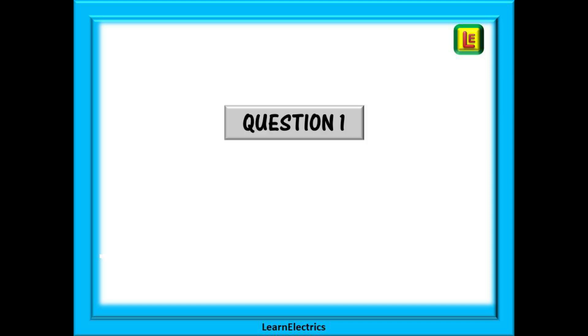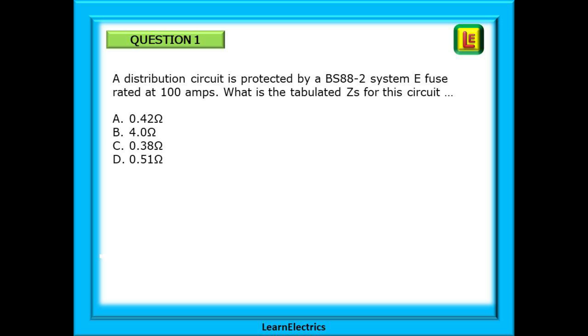Let's begin with question 1. A distribution circuit is protected by a BS88-2 system E fuse rated at 100 amps. What is the tabulated ZS for this circuit? Pause the video and find the answer. You should have answer A, 0.42 ohms and the box shows you the route to the correct answer.